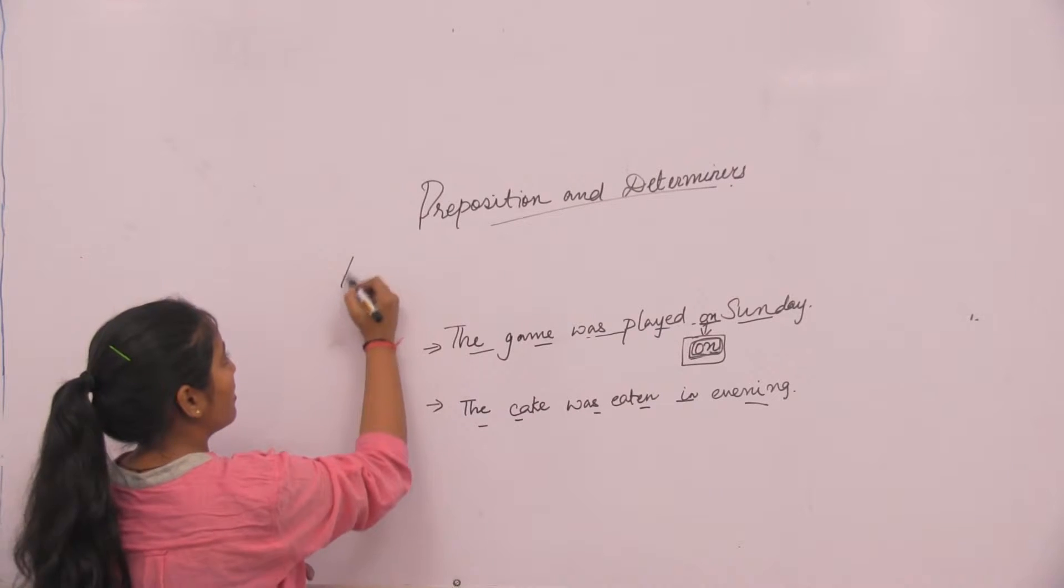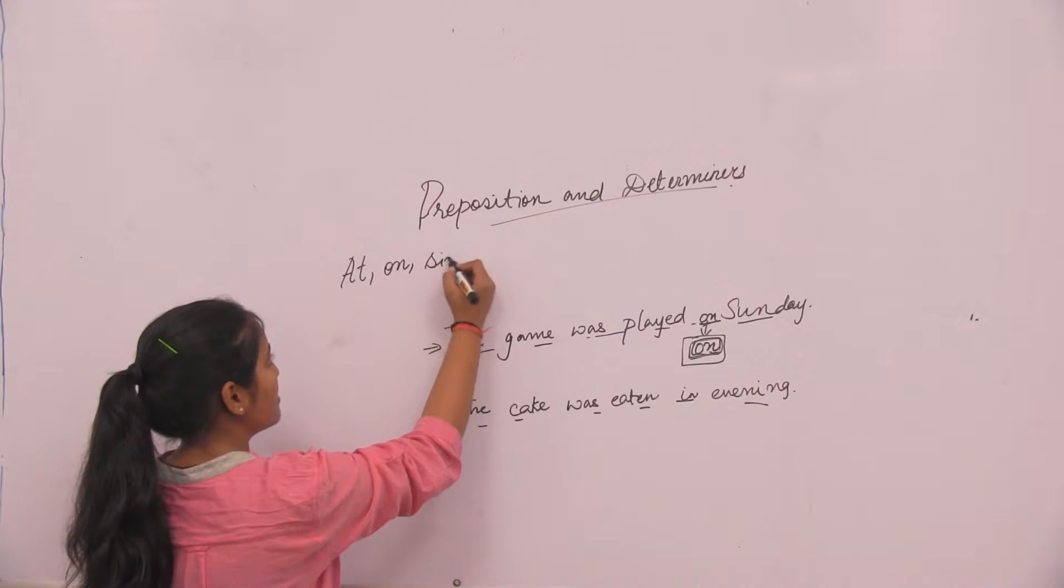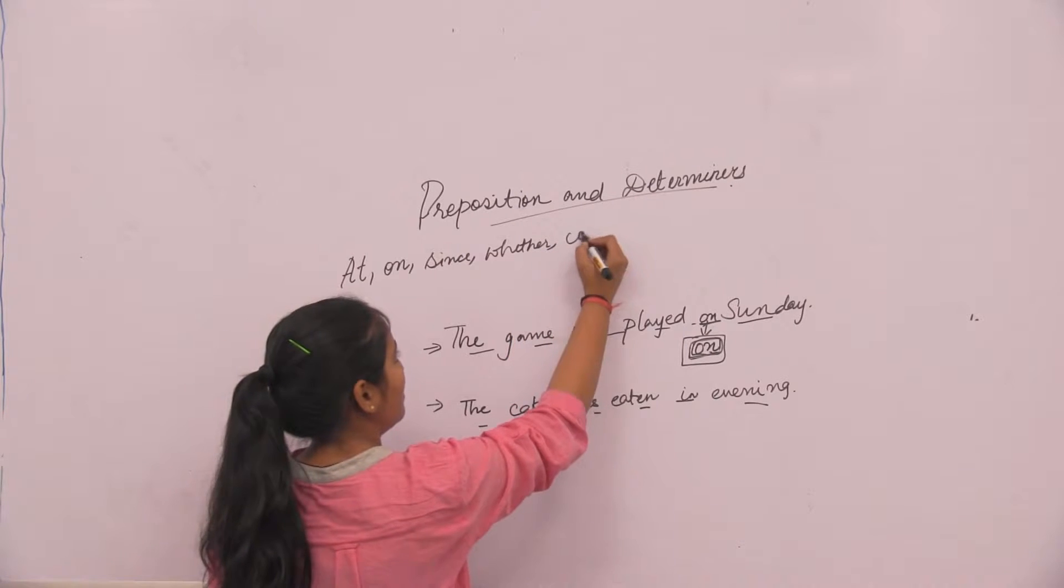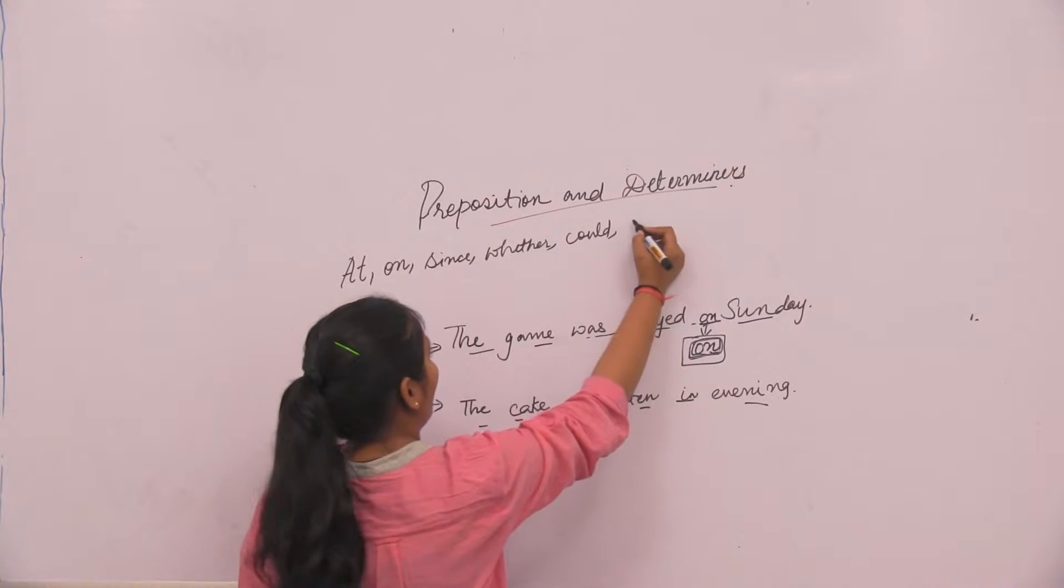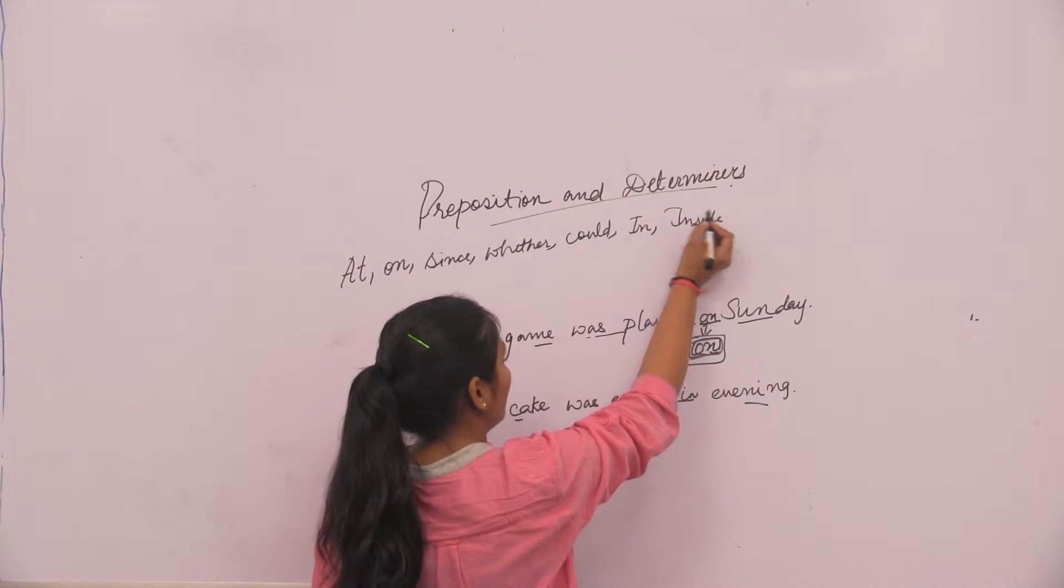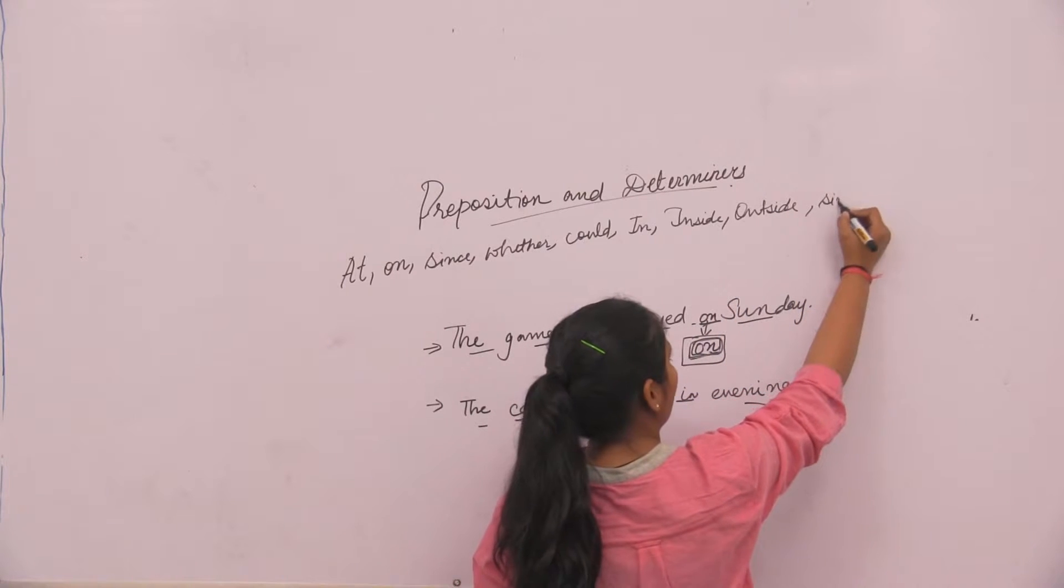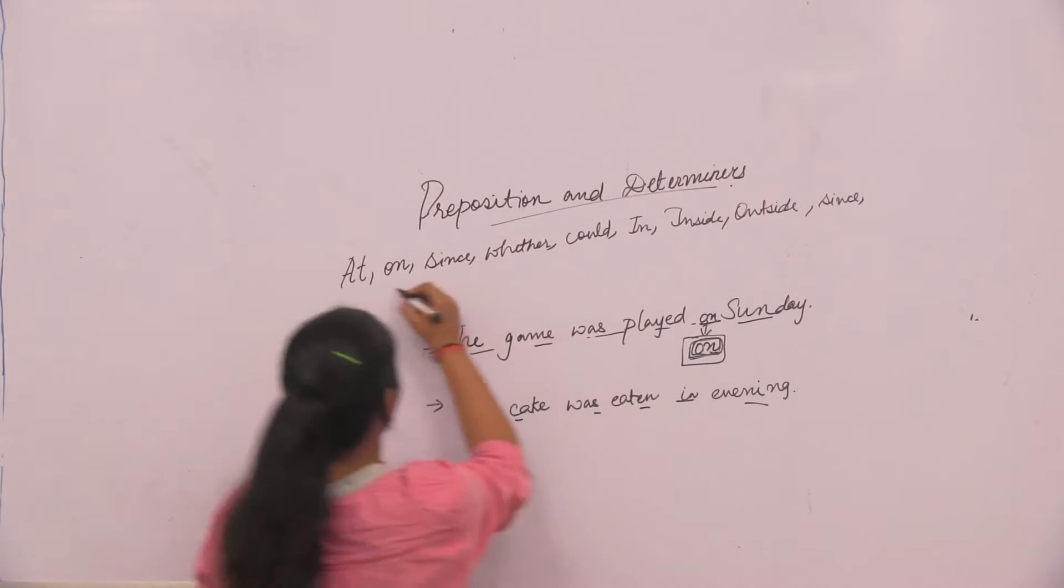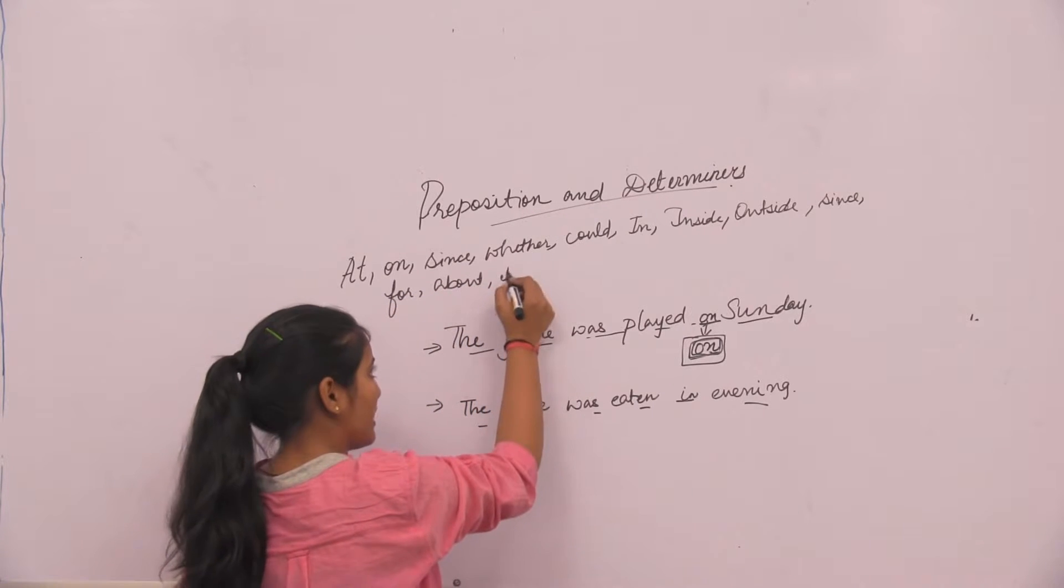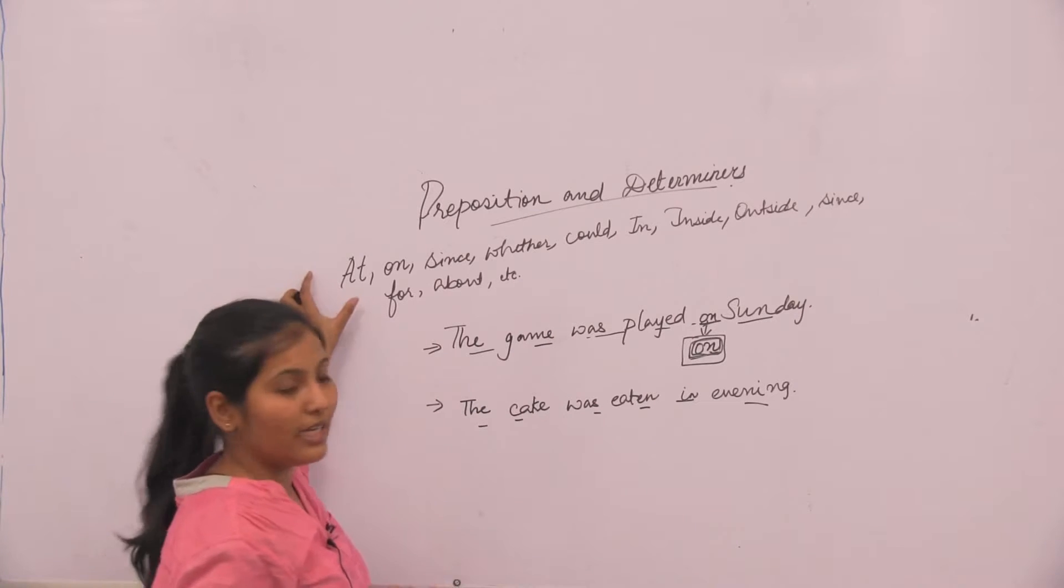I will tell you some common use prepositions that we use in our daily life. These are at, on, since, with, could, in, inside, outside, for, about, and etc. There are many prepositions that we use in our daily life.